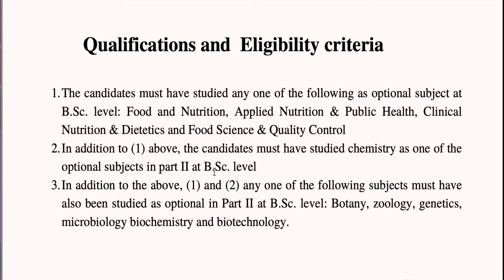The required BSc optional subjects include Food and Nutrition, Applied Nutrition and Public Health, Clinical Nutrition and Dietetics, and Food Science and Quality Control, along with Chemistry and Botany, or Zoology, or Genetics, Microbiology, Biochemistry, and Biotechnology.